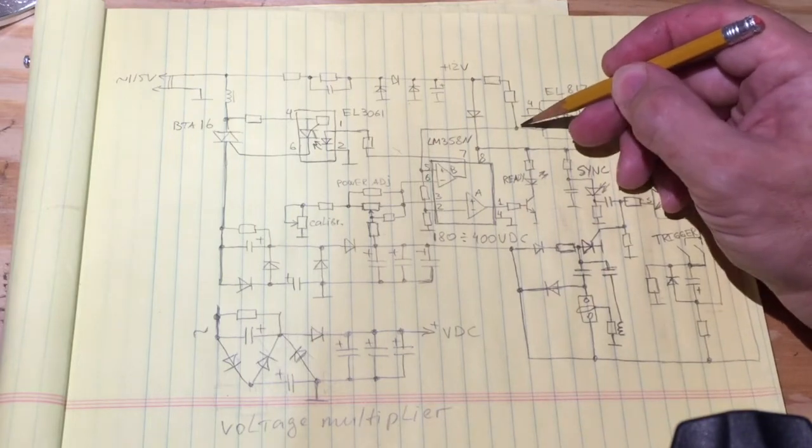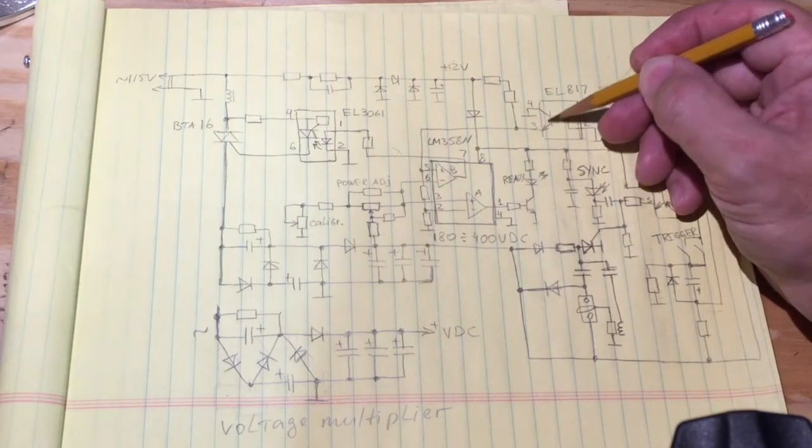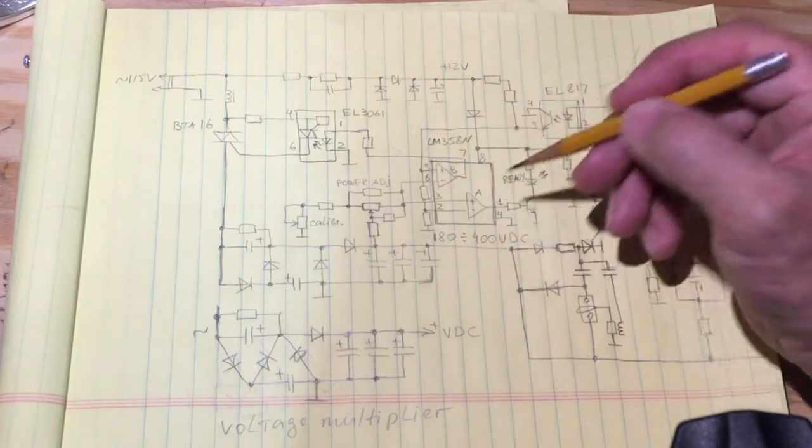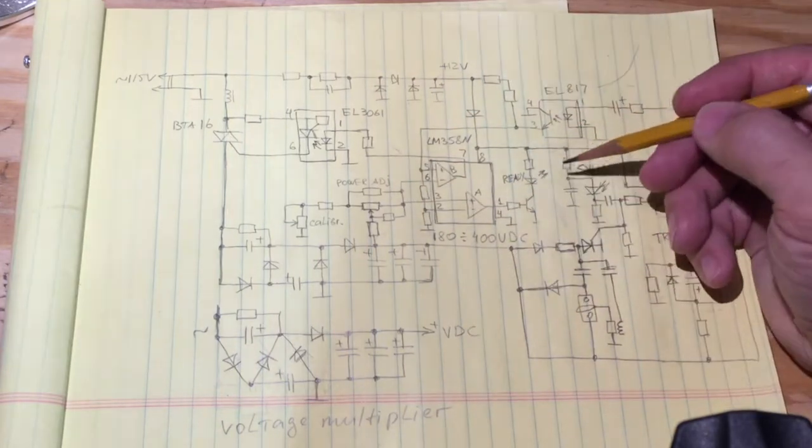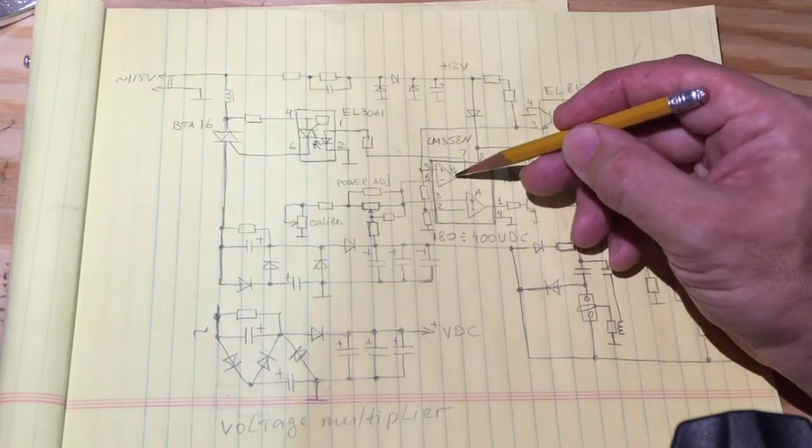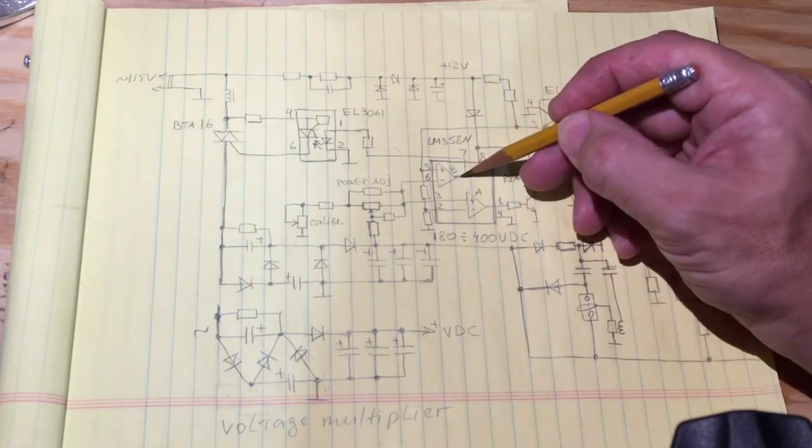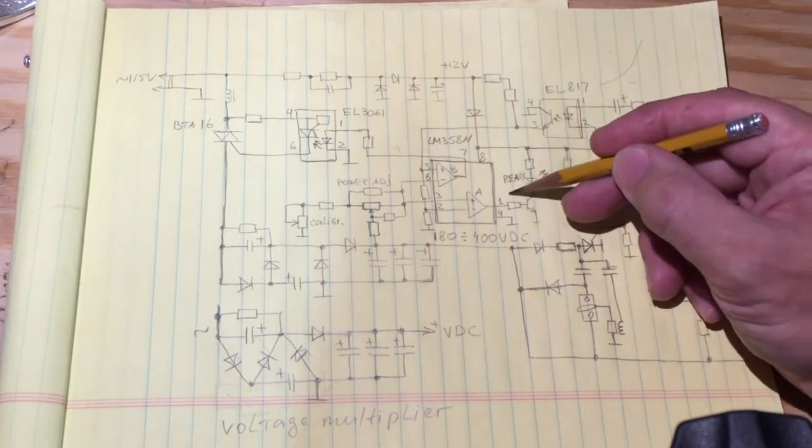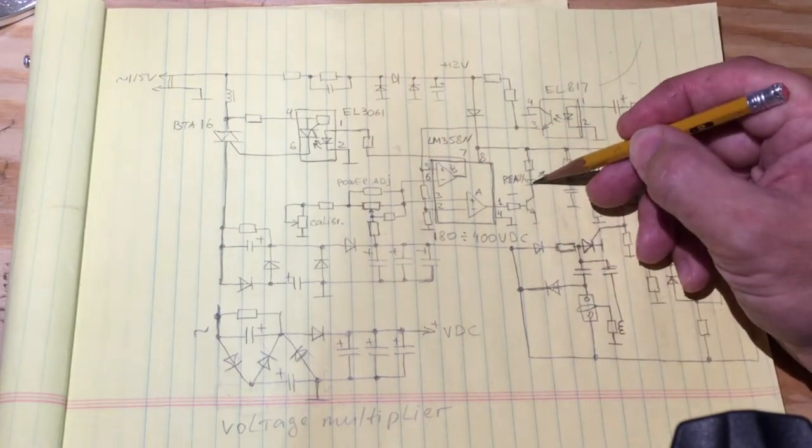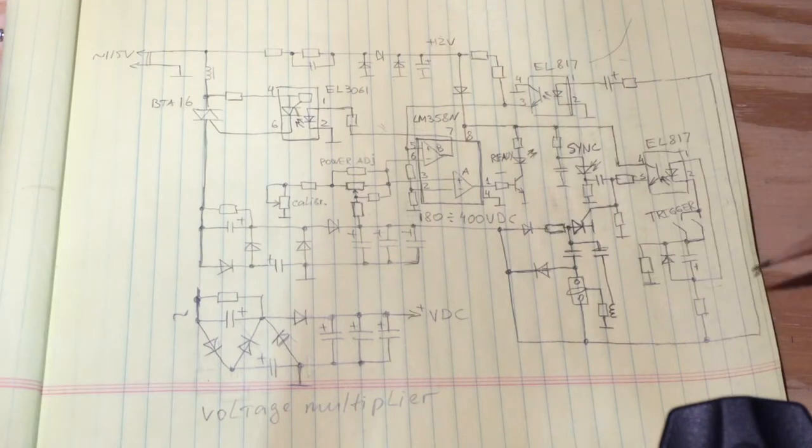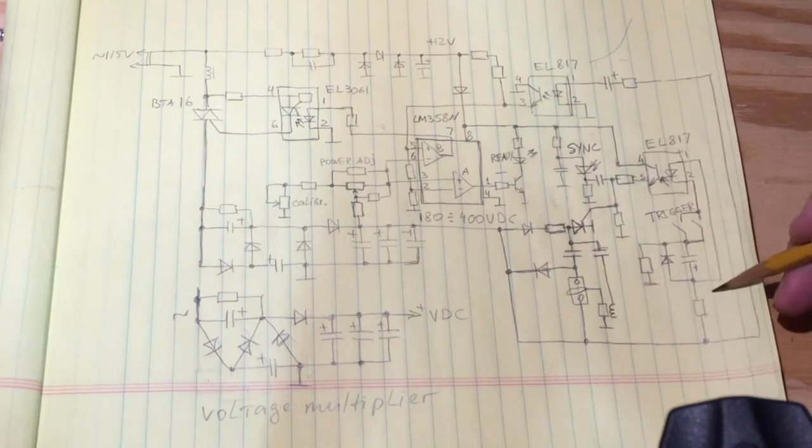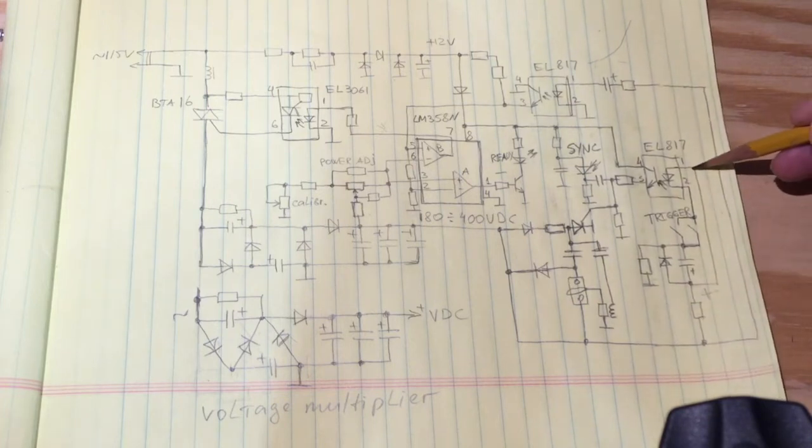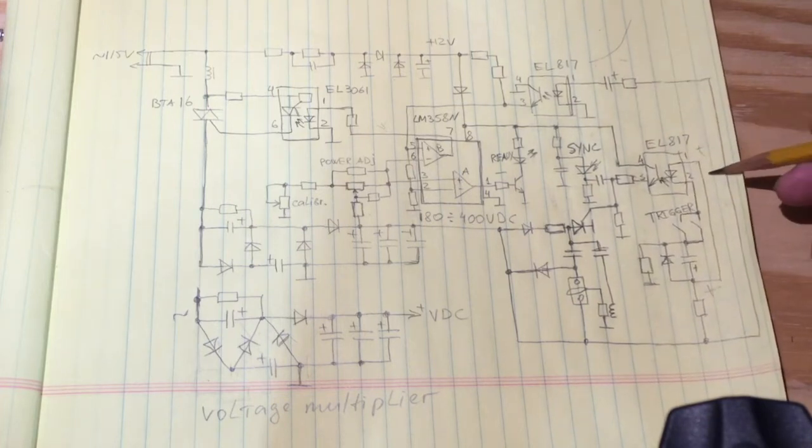The non-inverted input of the operational amplifier is controlled by this little circuit there, which is an optocoupler. So as the voltage of the power bank rises, optocoupler opens and grounds the input so that the operational amplifier shuts down. As this one op amp closes down, the other one opens up and ready light comes on.